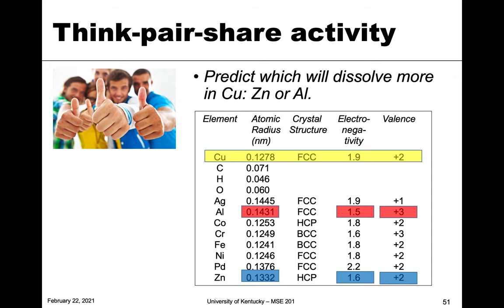The question also asks about copper. I've got copper highlighted with all of its information. Looking at zinc versus aluminum in copper: for the size criteria, copper is pretty small, aluminum is pretty large, but zinc is kind of in the middle — so zinc wins that criteria.